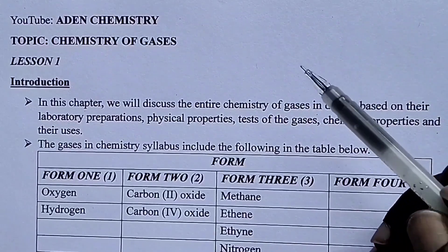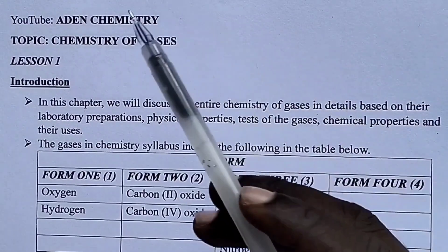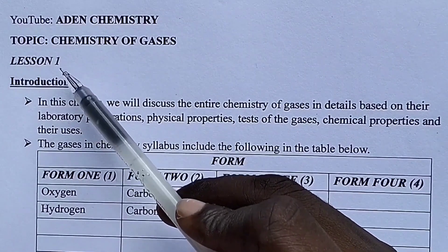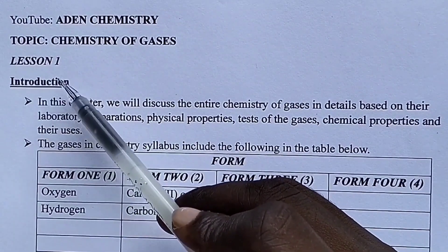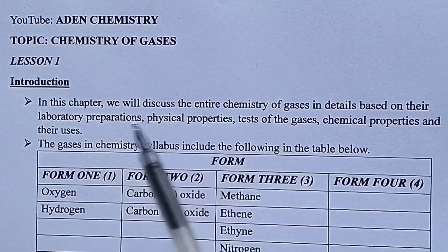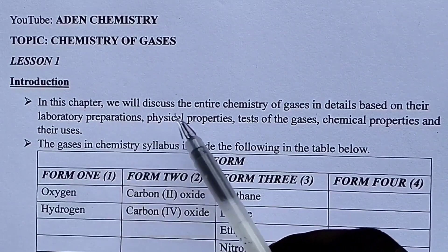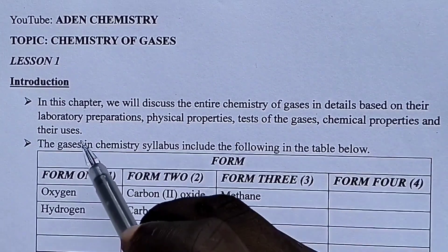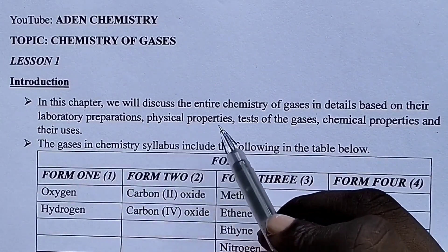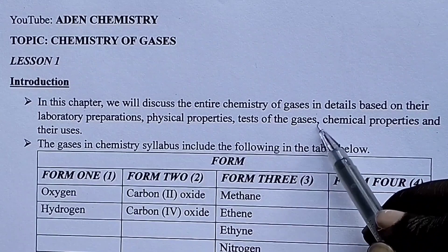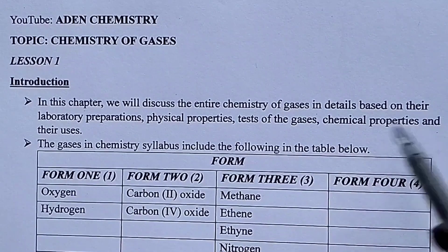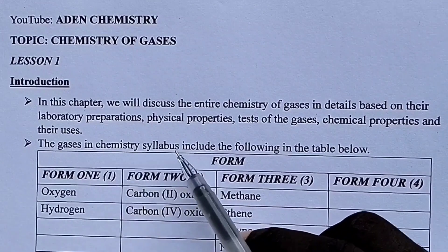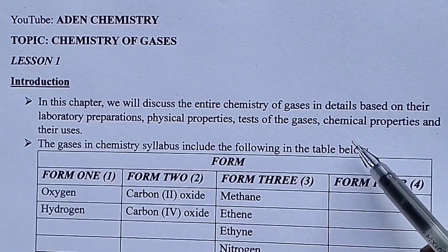Hello students, welcome. Today we want to do a topic called Chemistry of Gases, Lesson One. We are going to see the introduction side of the chemistry of gases. In this chapter, we will discuss the entire chemistry of gases in detail based on their laboratory preparations, their physical parameters, tests of the gases, their chemical parameters, and also their uses. The gases in the chemistry syllabus include the following in the table below.